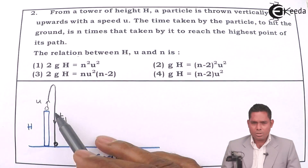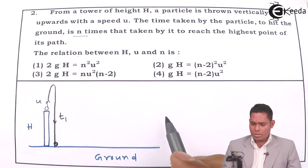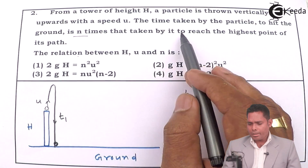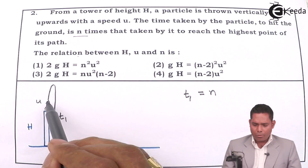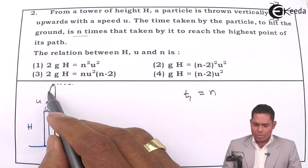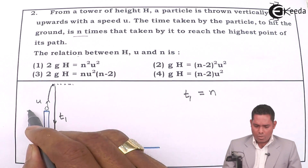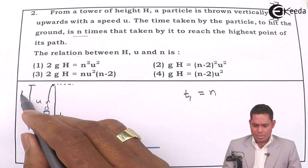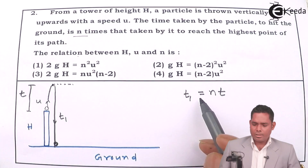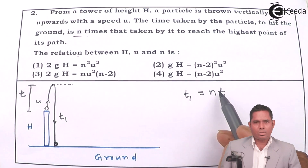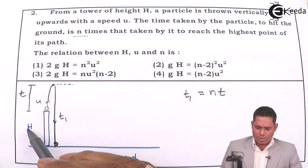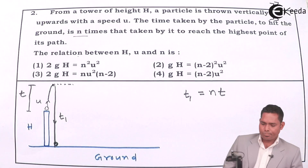The time taken by the particle to hit the ground is t1, which is n times the time taken by it to reach the maximum point of its path. The maximum point is this height here. The time taken to reach this highest point is t. So the question asks for the relation between h, u, and n.